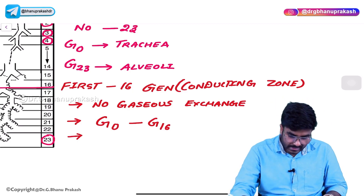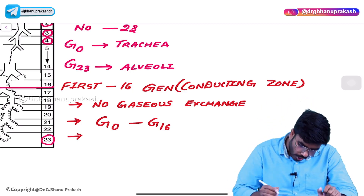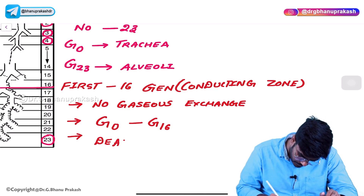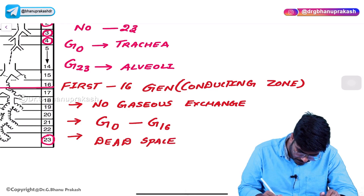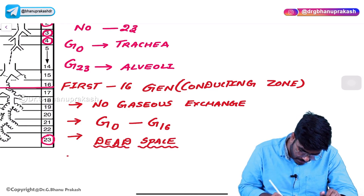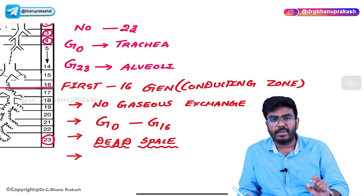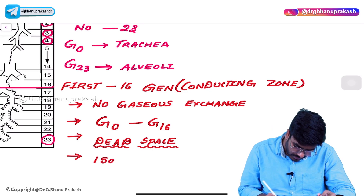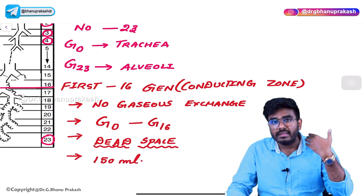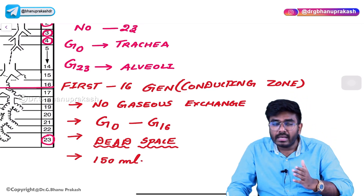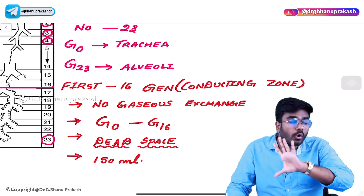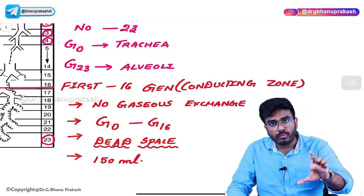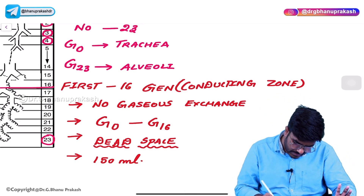Since there is no gaseous exchange, we can call this space the dead space, and the ventilation in this area is called dead space ventilation. The volume of this dead space is almost 150 ml of air. With every breath, 500 ml of air enters our lungs, and of that 500 ml, 150 ml stays in the conducting zone with no gaseous exchange. That space where there is no exchange is called dead space, and the dead space volume is almost 150 ml.